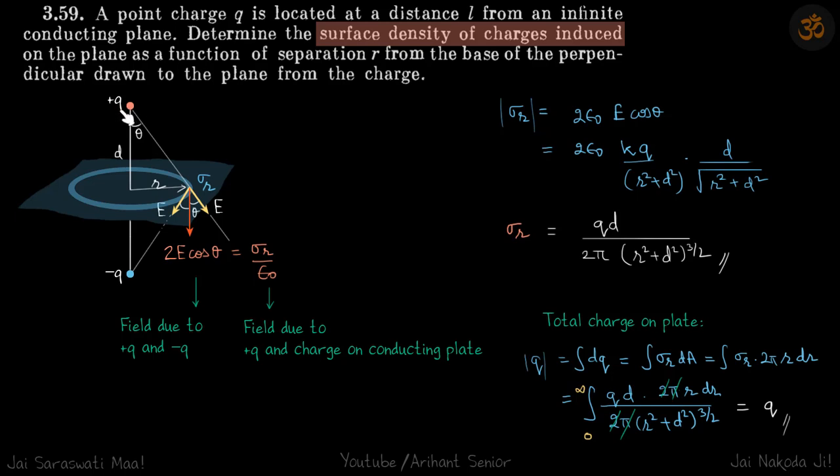We are given a positive charge q in front of an infinitely conducting plate, and we need to find the surface density of charges induced on this plate. We'll take a small element at a distance r from the line joining our charge and its mirror charge.